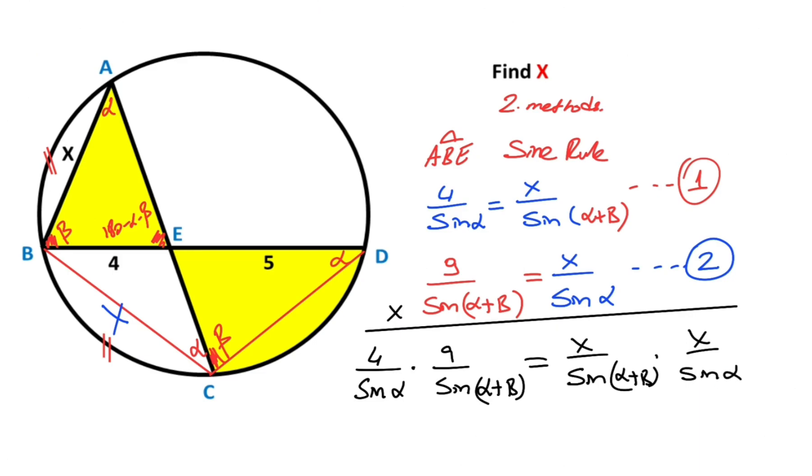If we simplify the expression, these are again and these are also again. So x squared equals 36 that means x is going to be 6 units.